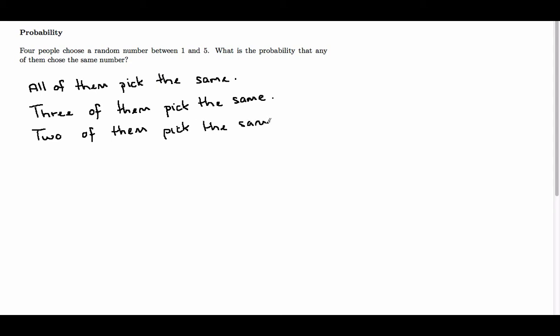So there are many different combinations to calculate this probability. It's going to be a very long calculation working out the probability that they all pick the same, that three of them pick the same, then two of them pick the same.